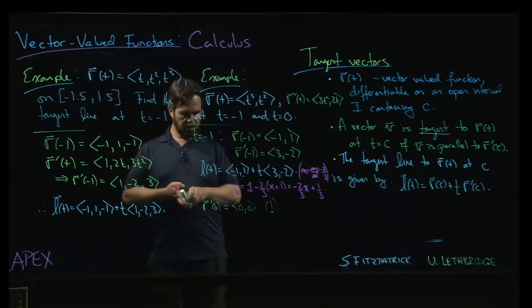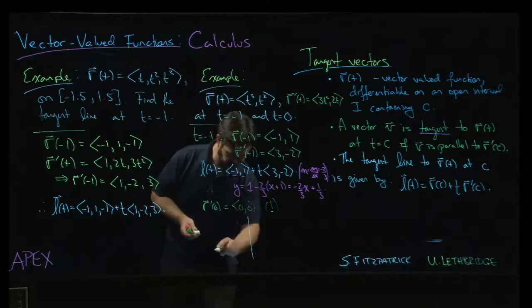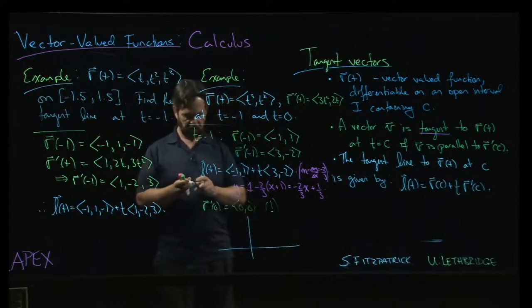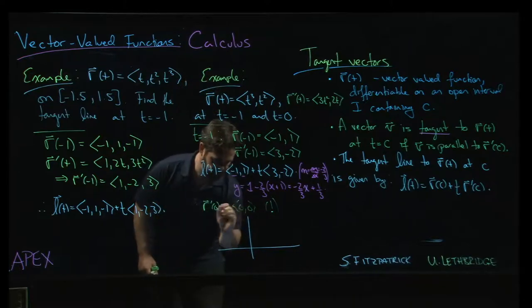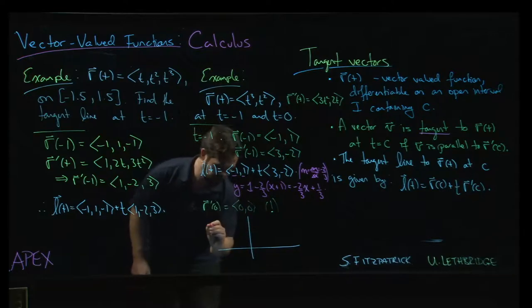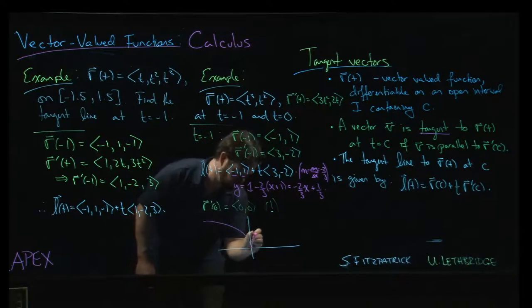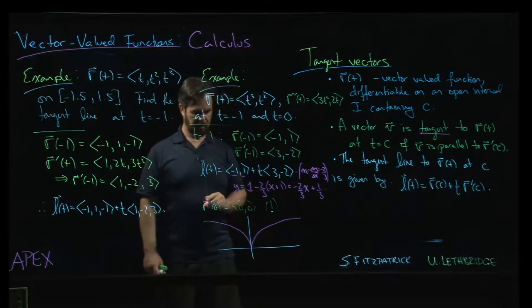And if you think about what that, you know, when you graph this curve, what does it look like? Well, then you can understand a little bit better why we get this sort of 0 result at the origin,